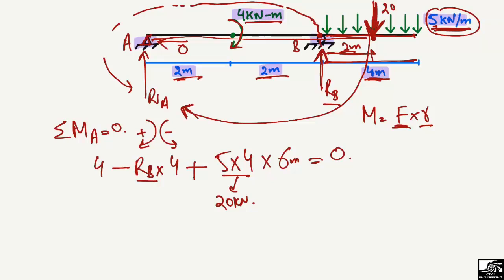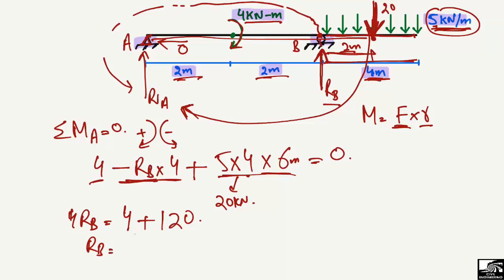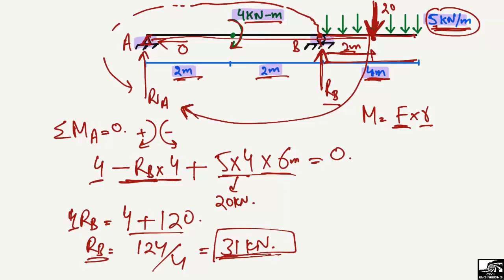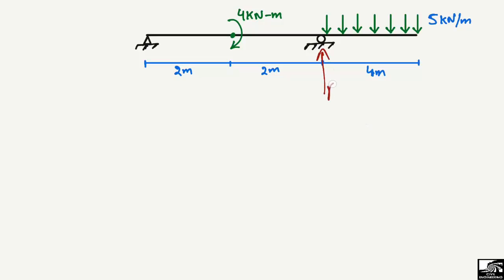Setting the summation of moments at point A equal to zero: 4 + 20 × 6 − RB × 4 = 0. Shifting RB to the right side: 4 × RB = 4 + 120 = 124. Dividing by 4, we get RB = 31 kN.